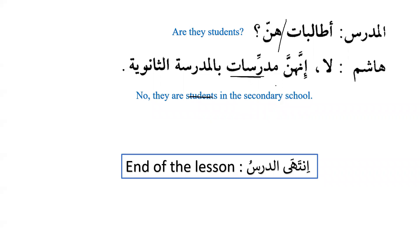End of the lesson. Hunna is ismu inna and mudarrisatun is khabaru inna, bil madrasati al-thanawiyyati means in the secondary school. The lesson closes: 'Subhanaka Allahumma wa bihamdika, ashhadu an la ilaha illa anta, astaghfiruka wa atubu ilayk. Assalamu alaykum wa rahmatullahi wa barakatuh.'